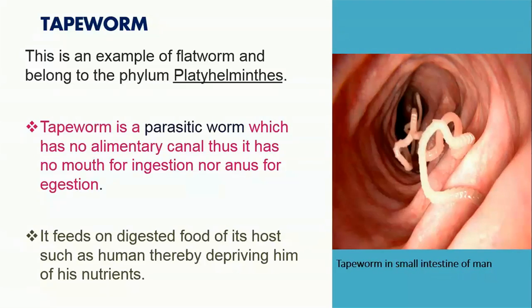Let's look at tapeworm. This is an example of a flatworm and also belongs to the phylum Platyhelminthes. Tapeworm is a parasitic worm which has no alimentary canal — it has no mouth for ingestion nor an anus for egestion. It lives inside the intestine of its host and absorbs the digested food of its host through its body wall, thereby depriving the host of nutrients. The food enters the tapeworm's body directly; it does not have a mouth or an anus.